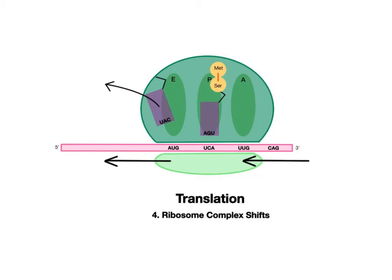In step four, the initiator transfer RNA exits the large subunit from the E site and returns to the cytoplasm, where it can bond to another methionine amino acid and bring it back to the growing protein chain. There is a shift as the entire translation complex moves from right to left. The transfer RNA bonded to both amino acids slides over from the A site to the P site. This leaves the A site open for the next incoming transfer RNA.